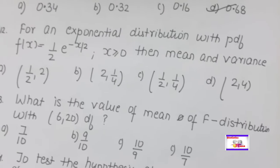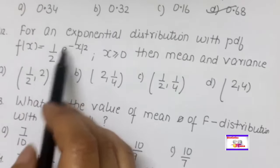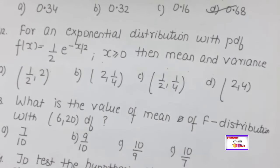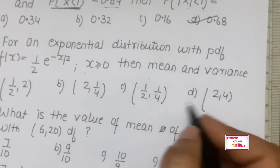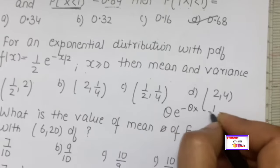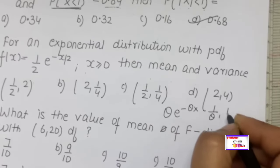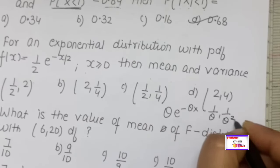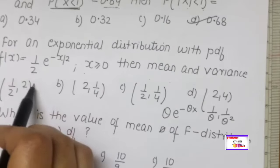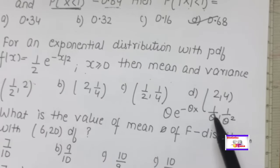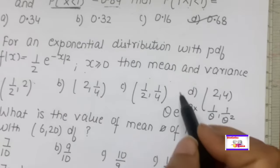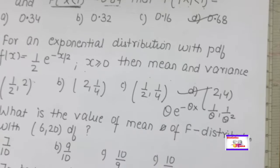For an exponential distribution with PDF f(x) = θe^(−θx), the mean = 1/θ and variance = 1/θ². Here θ = 1/2, so mean = 2 and variance = 4. The answer is mean = 2, variance = 4.